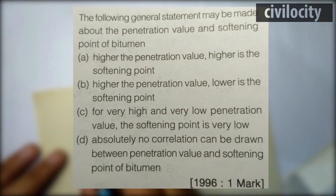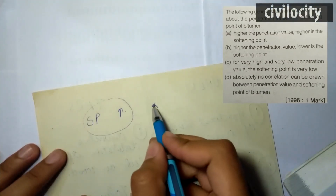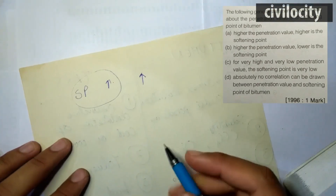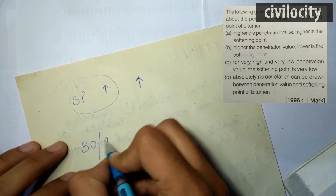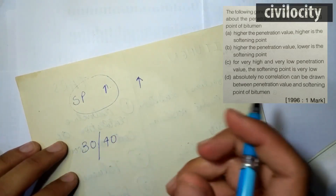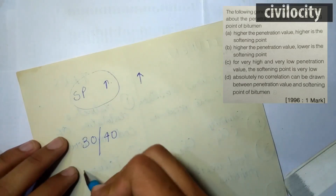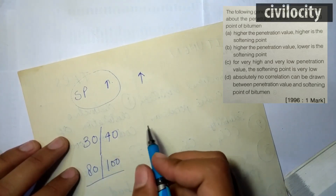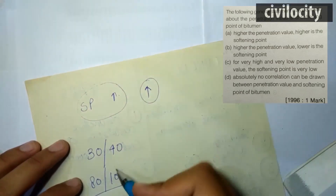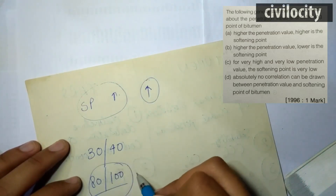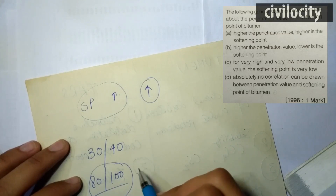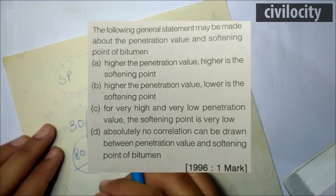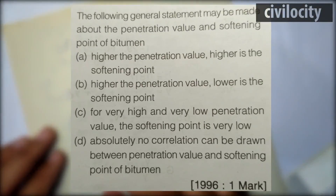Let's clear our doubts. If the softening point is high, it means it has low temperature susceptibility, which means it has high viscosity. Looking at penetration values: 30-40 value is used for low temperature areas, and 80-100 value is used for high temperature areas. So if it has high viscosity, it should also possess high penetration values. Therefore, the correct answer is A: higher the penetration value, higher the softening point.